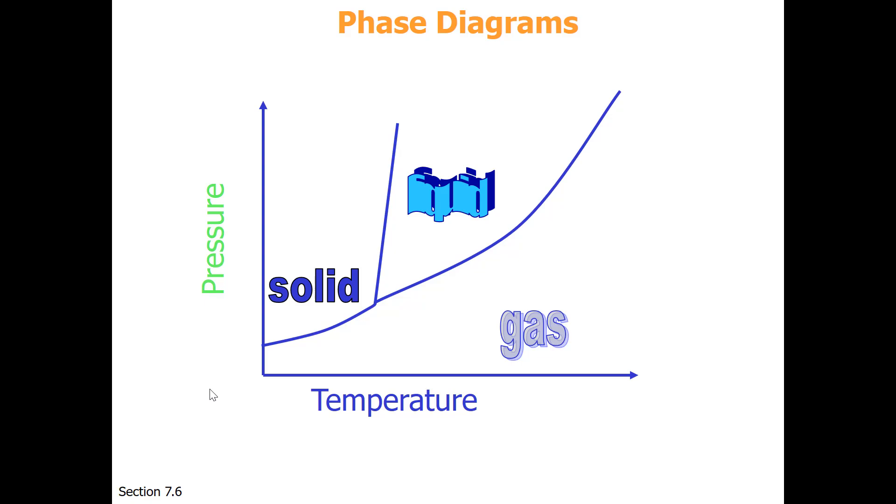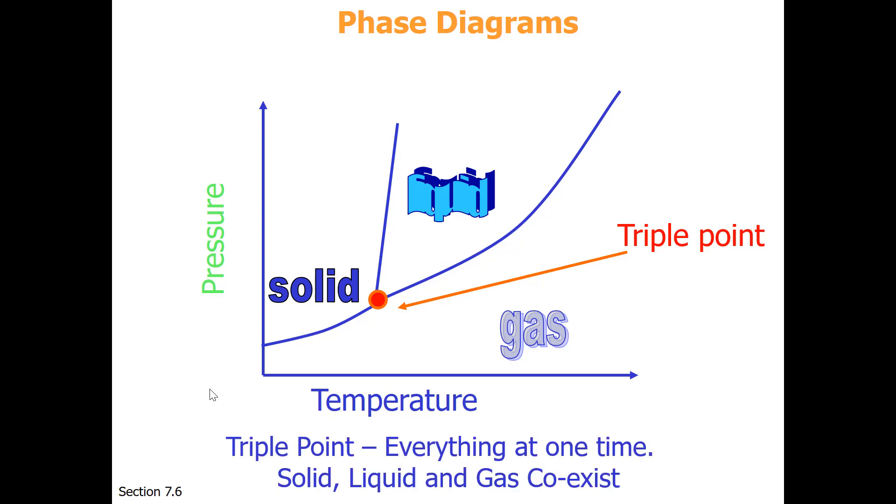There are a few other unusual places on phase diagrams. One of these is known as the triple point. This is where solid, liquid, and gas exist simultaneously.